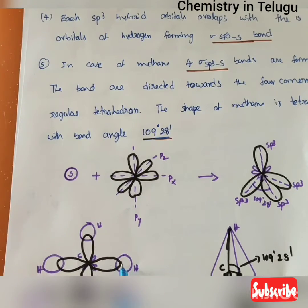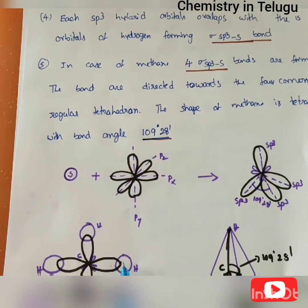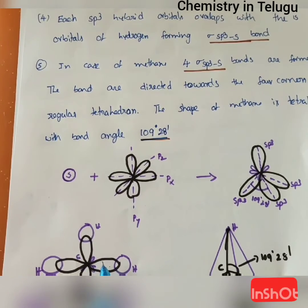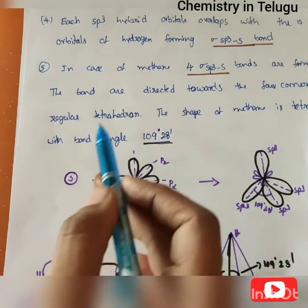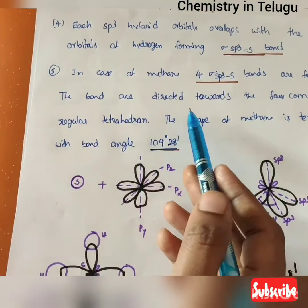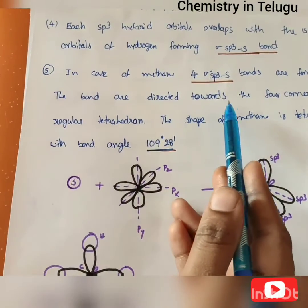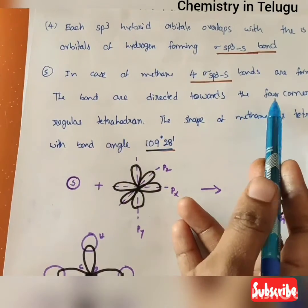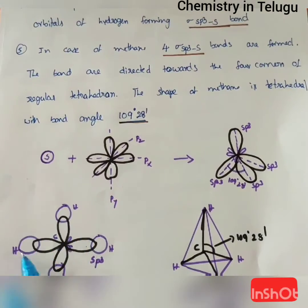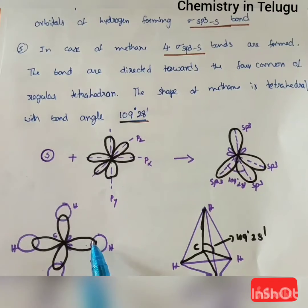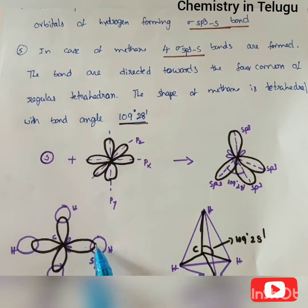Four SP3–S sigma bonds are formed in total, and these bonds are directed towards the four corners of a tetrahedron.